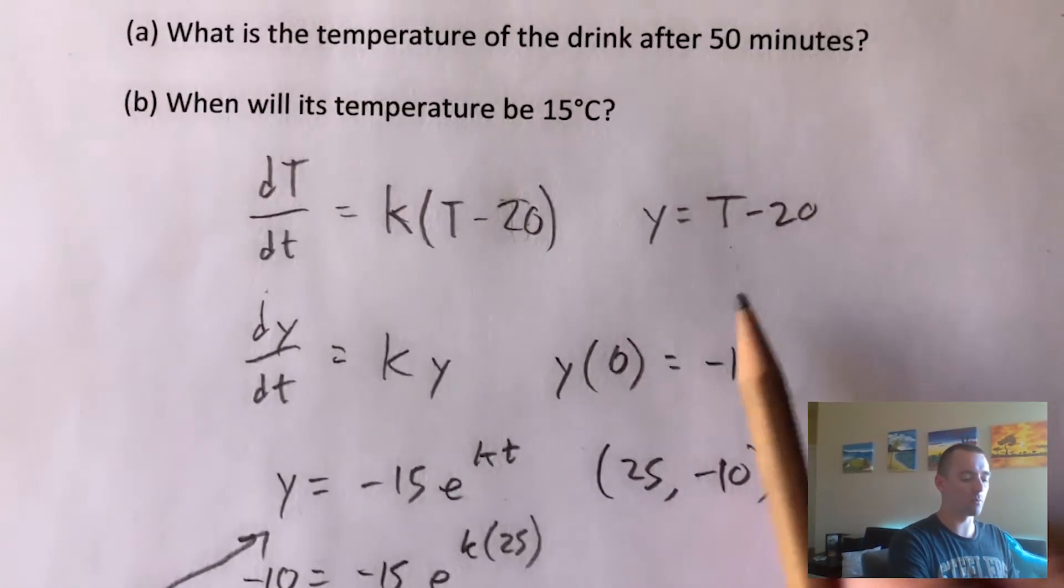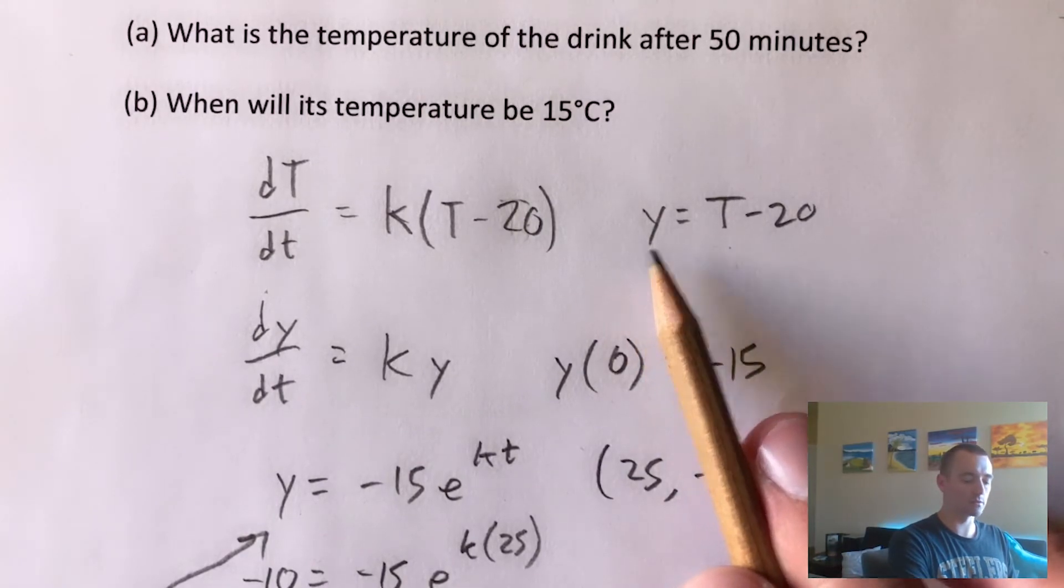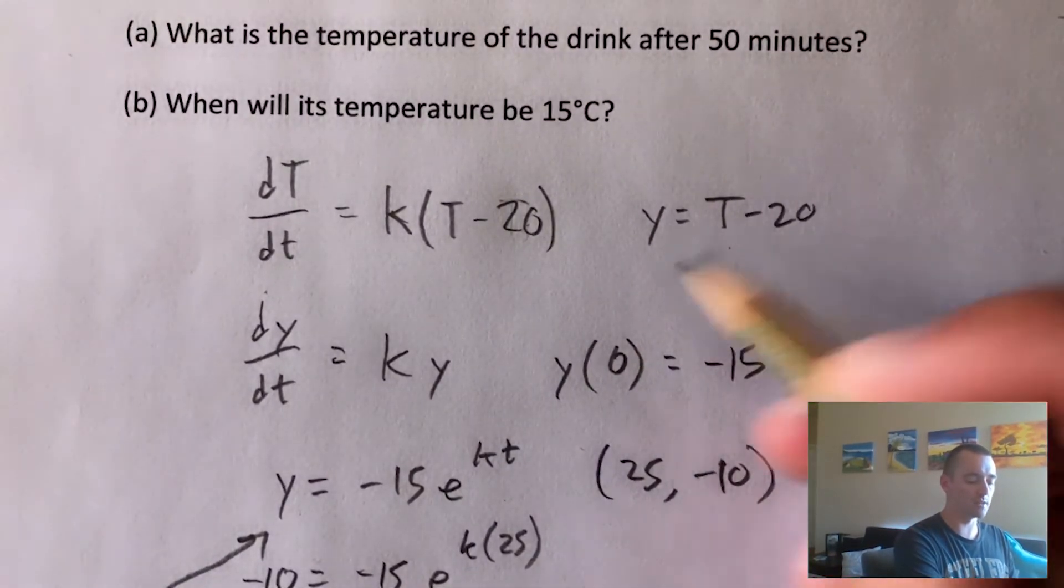So we want to go back from y back to T. So to do that, remember, the temperature is just 20 more than whatever y is. If we solve this equation for T instead of y, we would just add 20 to both sides, and we would get y plus 20 equals our temperature.